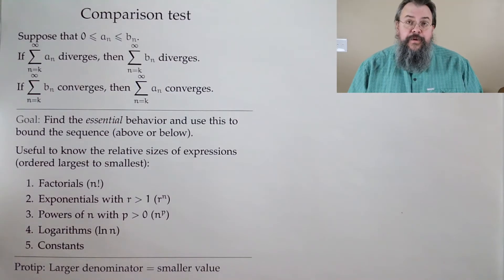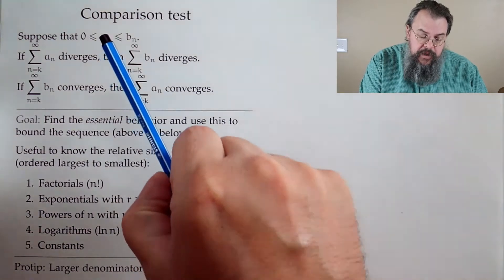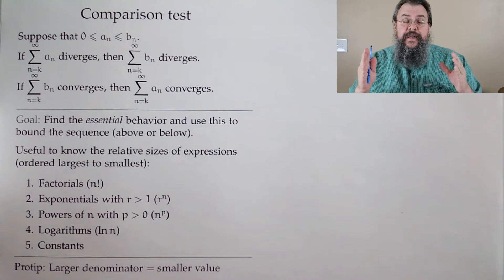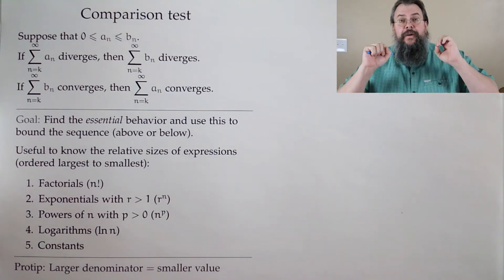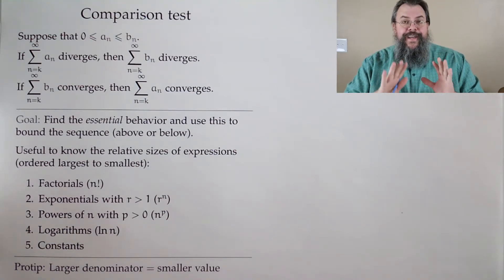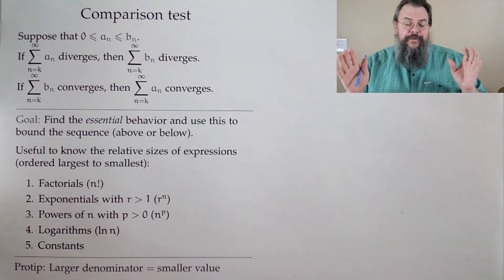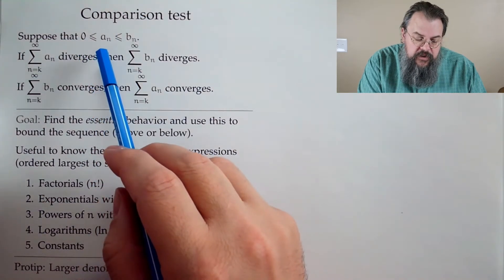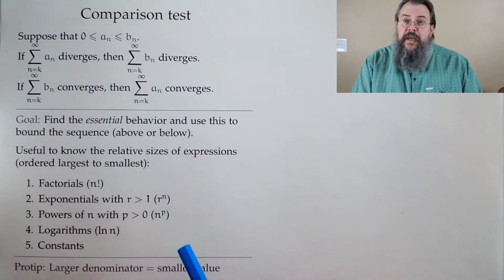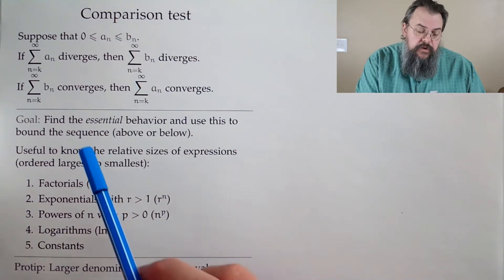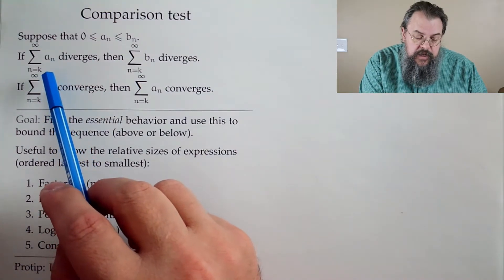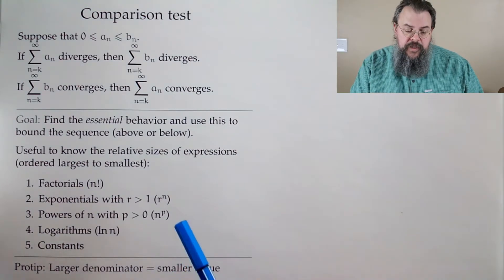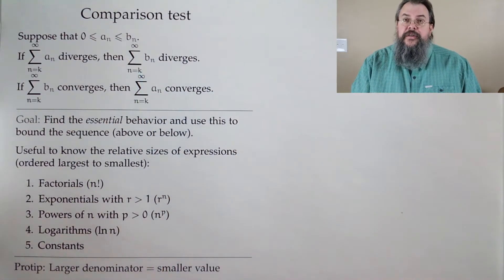So we'll start very simply with something called the comparison test. And it says what? Suppose you have some non-negative things being added up. And for right now, we're going to focus on non-negative. We'll get into things with negative later on. So we have zero less than or equal to a_n less than or equal to b_n. And it says what? Suppose the sum a_n diverges. And what has to be true? The sum of b_n diverges.